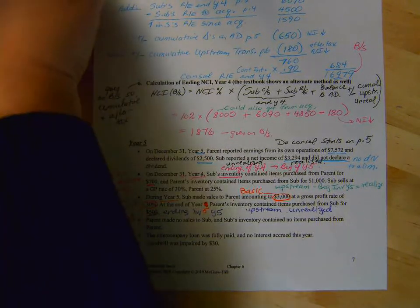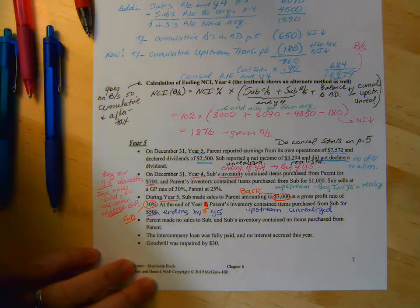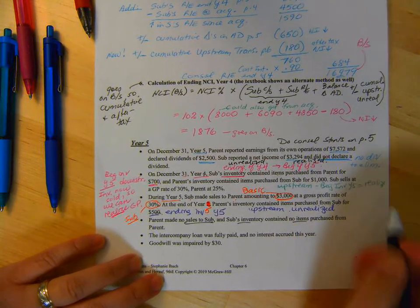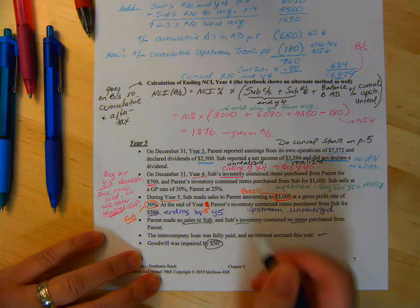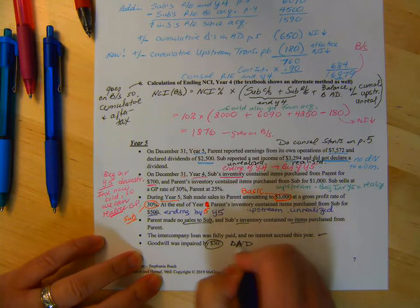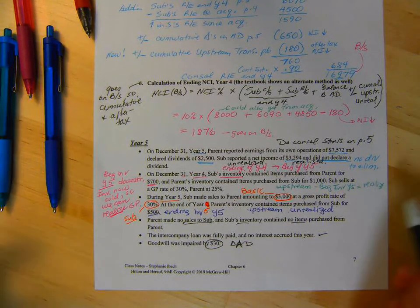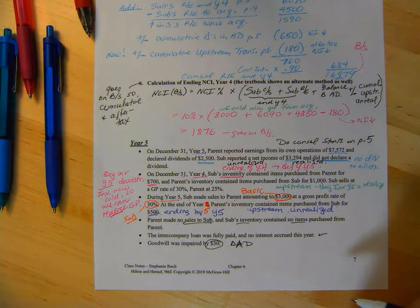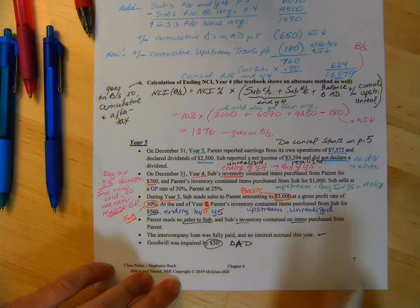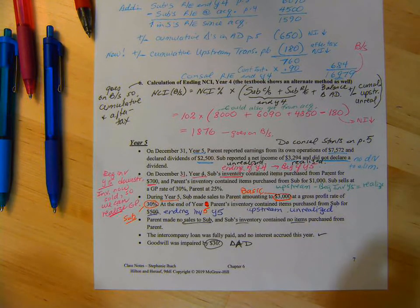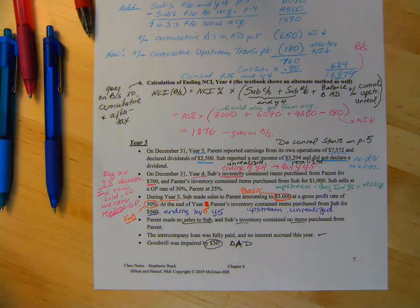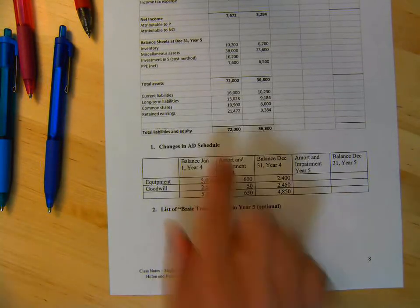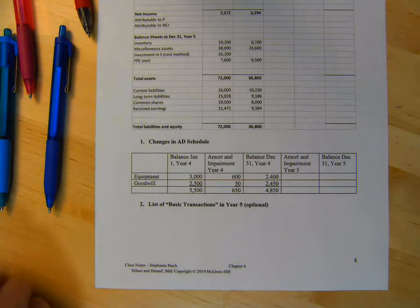Now the parent made no sales to the sub. No sales to the sub. Sub's inventory contained no items purchased from the parent. Intercompany loan was fully paid, no interest, and goodwill. That's going to be on changes of AD. Okay, so all the realized, unrealized have to go on the unrealized, realized schedule or schedule of intercompany profits. And the basic just go by themselves. Okay, so let's go on to page 8. And on page 8, here's the financial statements for year. So that's what we'll do last because we do all the work to do that. Then we'll look at the changes in AD schedule. We're going to do that next.